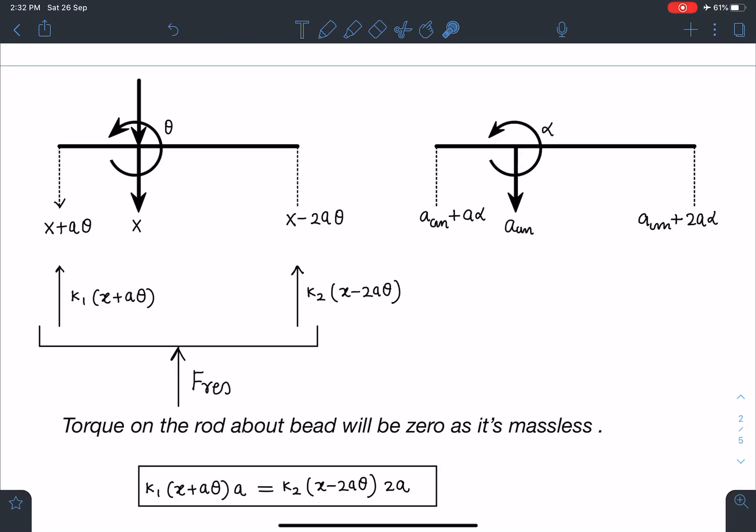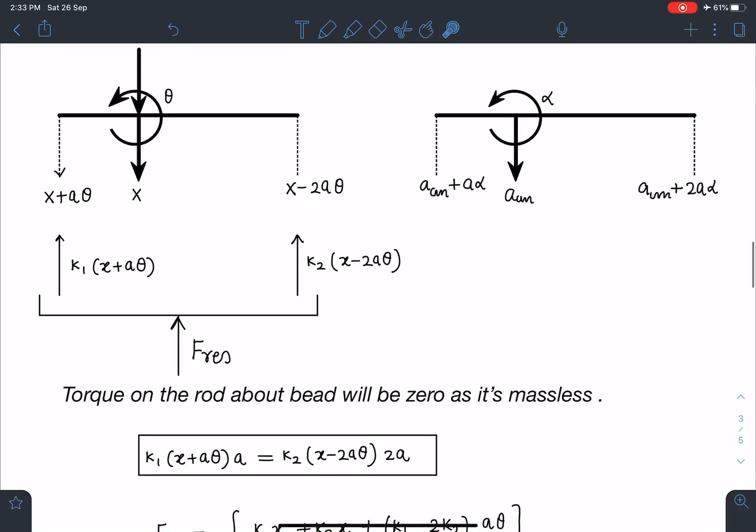So I can say my F_restoring is actually sum of this: k₁(x + a·theta) plus k₂(x - 2a·theta). I'll be writing it. We can express the entire thing in terms of acceleration terms also but I am avoiding it. You can try that also.